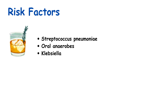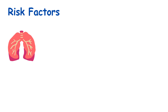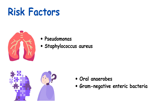There are risk factors for community-acquired pneumonia. People with alcoholism can acquire pneumonia from Streptococcus pneumoniae, oral anaerobes, and Klebsiella. Patients with COPD can acquire infections from Haemophilus and Pseudomonas species. Patients with structural lung disease can acquire infections from Pseudomonas and Staphylococcus aureus. Patients with dementia, stroke, and altered consciousness can acquire infections from oral anaerobes and Gram-negative enteric bacteria, and are at risk of aspiration pneumonia.